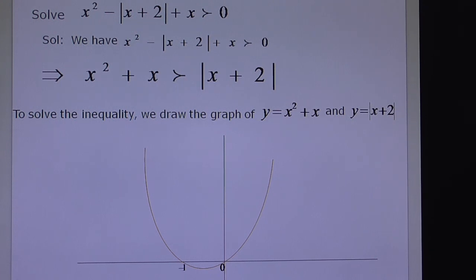Now draw the graph of |x + 2|. This is a V-shaped graph. Since it's |x + 2|, this point is plotted at -2. Observe the graph.